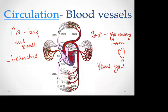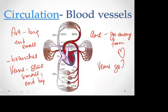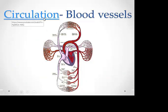Veins start small and end big, ending up as really large veins like the superior vena cava and inferior vena cava, which is how those two enter the heart — or even the coronary sinus. At every part in the body you can see that there are these capillary plexuses.